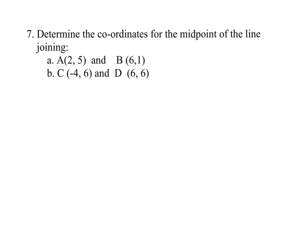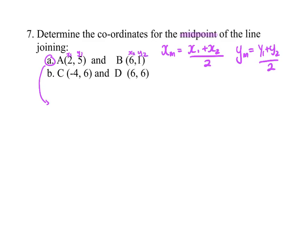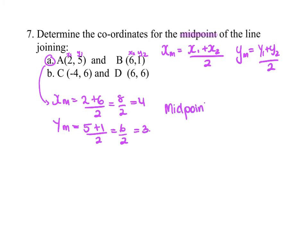To find the coordinates of the midpoint: x at the midpoint equals x1 plus x2 over 2, and y at the midpoint equals y1 plus y2 over 2. For the first pair of points, x midpoint equals 2 plus 6 over 2, which is 8 over 2, equals 4. Y midpoint equals 5 plus 1 over 2, which is 6 over 2, equals 3. So the midpoint between A and B is (4, 3).